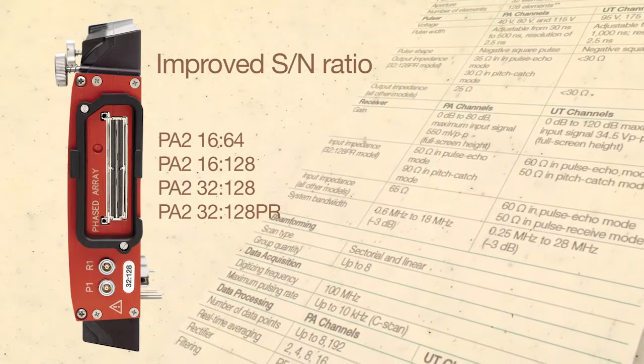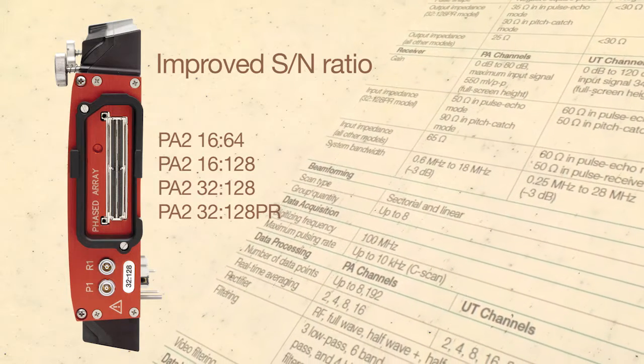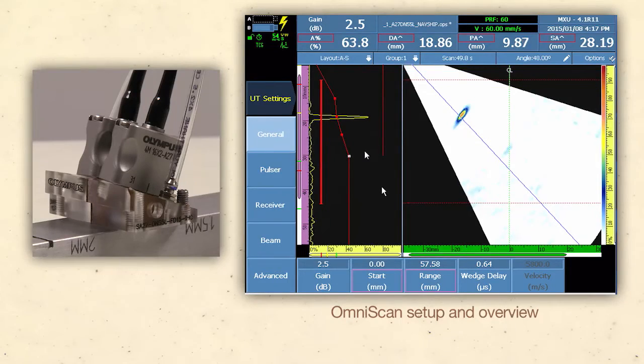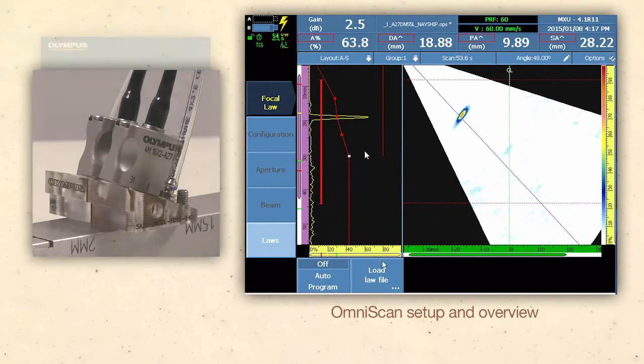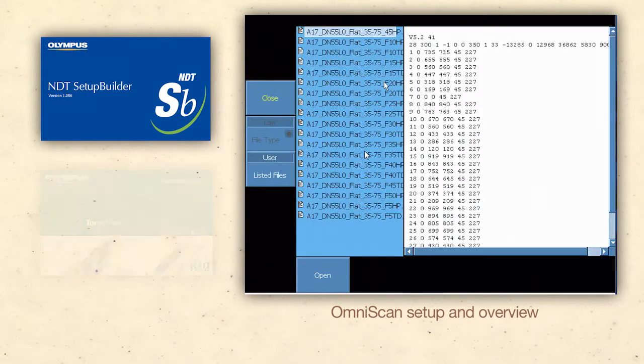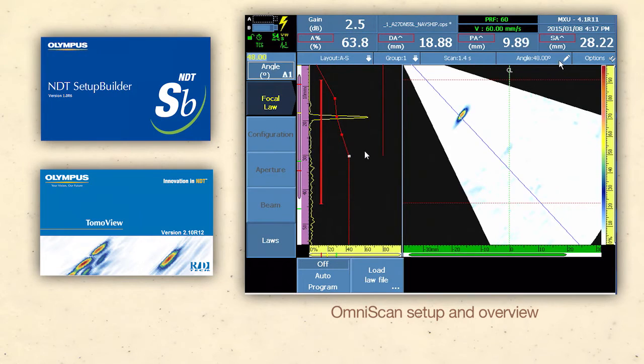The significantly improved signal-to-noise ratio is required for austenitic inspections. Standard OmniScan software supports DMA probes and requires a law file import from either the Olympus Setup Builder, TomoView Calculator, or library of predefined law files for S-scan configuration to include angular range and focus.